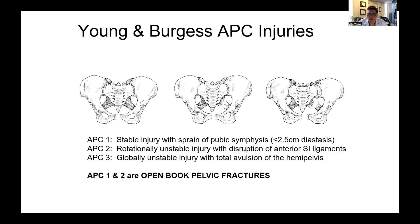Las lesiones por compresión AB son típicamente las llamadas lesiones del libro abierto, en las que hay una disrupción de la pelvis anterior y se abre en bisagra. Las de tipo APC 1 son estables con mínima separación de la sínfisis púbica. Las de tipo 2 son inestables, con todos los ligamentos anteriores rotos pero con bisagra posterior parcial, abriéndose hasta 5 centímetros. Solo se rompe la parte anterior de la articulación sacroiliaca; la posterior queda intacta. Al acomodar la sección anterior, la posterior a menudo se alinea. Las lesiones APC 3 son las más graves: evulsión completa de la hemipelvis, con todos los ligamentos posteriores también rotos.